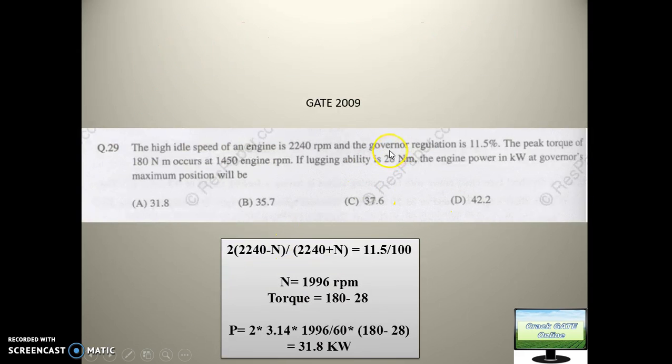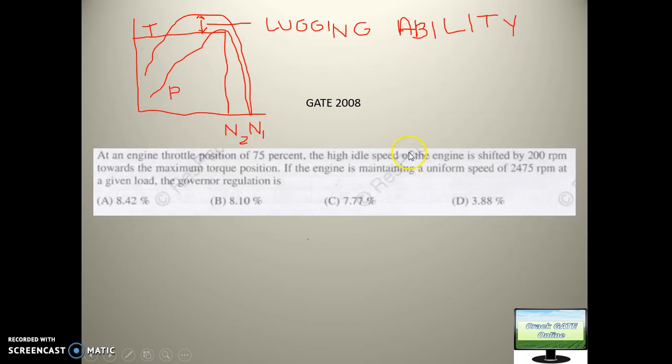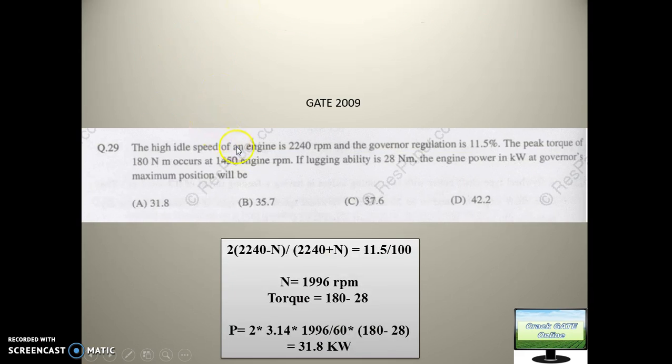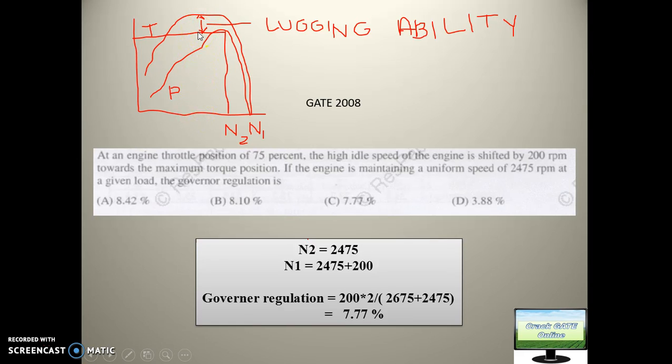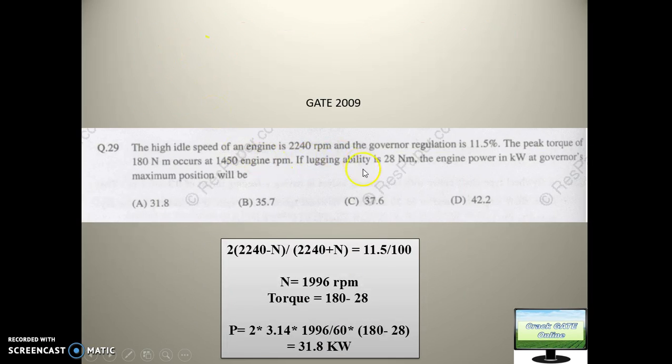That value is given as 28 Newton-meter. So if suppose maximum torque is 100 and this value is 10, then operating torque will be 100 minus 10, means 90 Newton-meter. So in this question, peak torque is given as 180 Newton-meter. This is the total value. And lugging ability is given as 28. So working torque will be 180 minus 28.